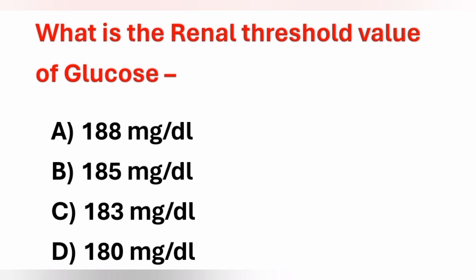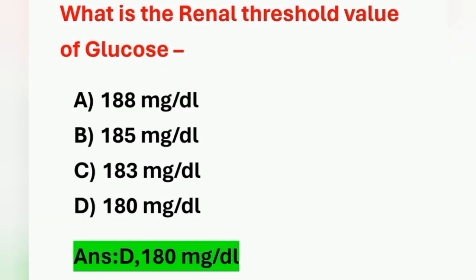Final question: what is the renal threshold value of glucose? Option A: 188 mg/dL, option B: 185 mg/dL, option C: 183 mg/dL, option D: 180 mg/dL. Option D, 180 mg per deciliter, is the correct answer. Here we discussed some questions from the endocrine system, and hopefully these questions will be helpful for your studies.